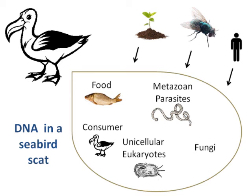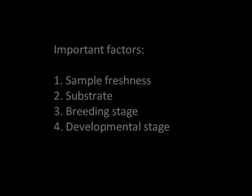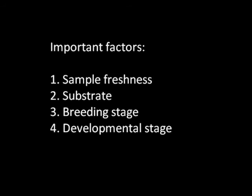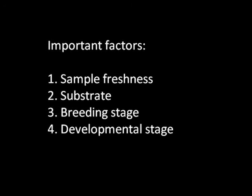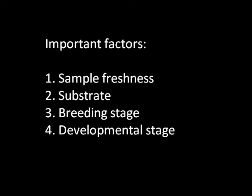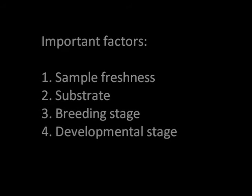Using shy albatross scat samples, we tested how to minimise the collection of non-food DNA in the sample and increase the detection of food DNA using universal primers. The following variables were explored: sample freshness, collection substrate, breeding stage, and the developmental stage of the animal — for example, can you collect from chicks and adults in seabirds?